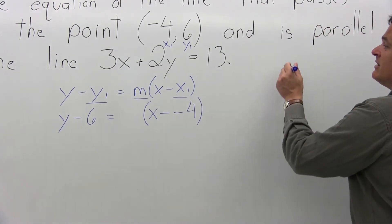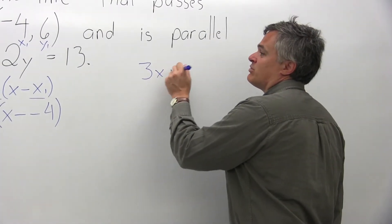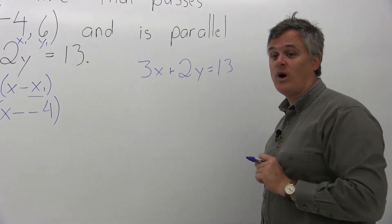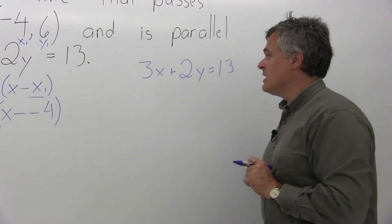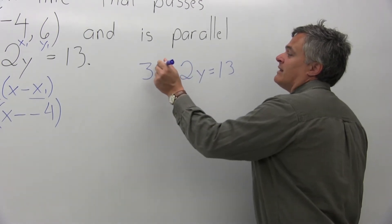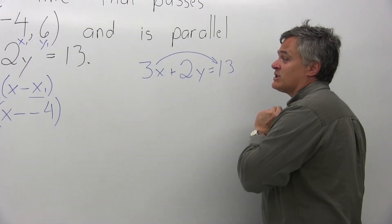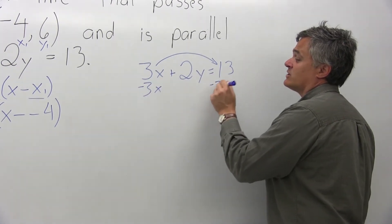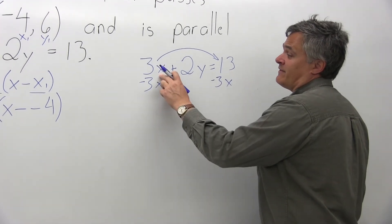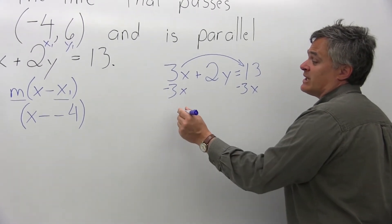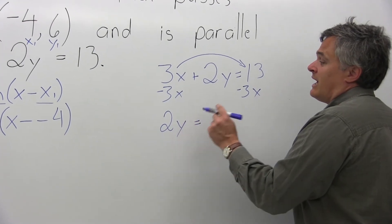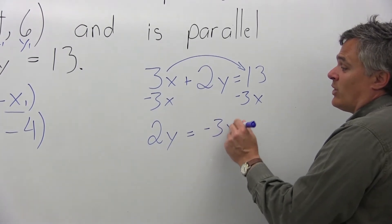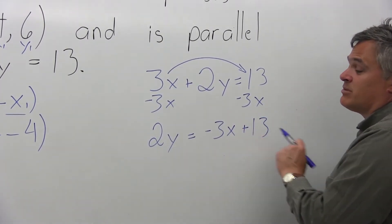So let me work off to the side. Start with the given line: 3x plus 2y equals 13. To solve for y, I'll get the 3x on the right side by subtracting 3x on both sides. On the left, 3x and negative 3x cancel, leaving 2y. On the right, negative 3x and 13 cannot be combined, so it's negative 3x plus 13.